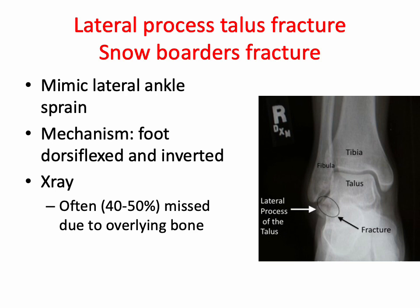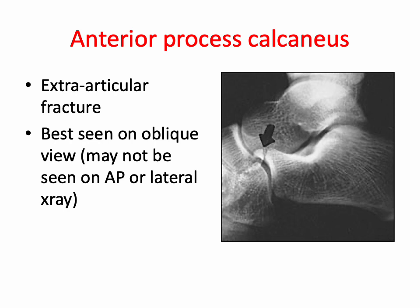Anterior calcaneal process fractures are one of the more commonly missed fractures of the calcaneus, with up to 90% not reported on radiographs, leading to non-union and unrecognized associated ligamentous injuries. They account for only 3% of calcaneal fractures and generally occur in association with lateral ankle ligament injury and mid-tarsal sprain. These are best seen on oblique views. The common mechanism is biflex inversion and distraction leading to an avulsion fracture of the anterior calcaneal process.